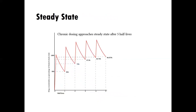We'll also spend time talking about steady state. Steady state is the process by which a person reaches the therapeutic effect of the drug. It typically takes about five half-lives, and we'll talk about what this means in terms of how long it takes for a client to see notable benefits from taking a medication for psychiatric reasons.